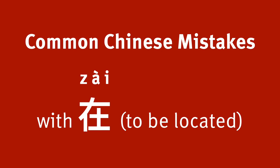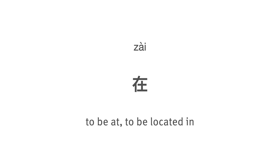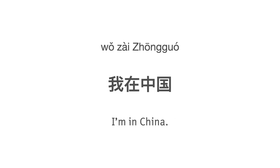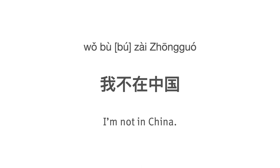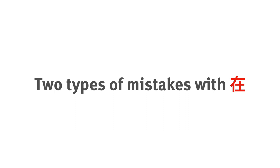With that being said, let's get started. In this video, let's take a look at some of the most common mistakes beginners make with the word 在. 在, as you probably know, means 'to be at' or 'to be located in.' For example, 我在中国 means 'I'm in China.' Or if you're not in China, you can say 我不在中国. Now let's take a look at two common mistakes with 在.